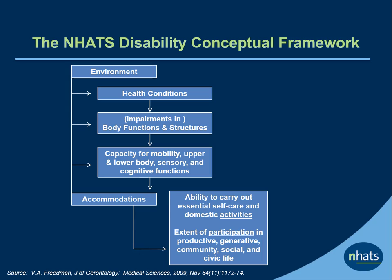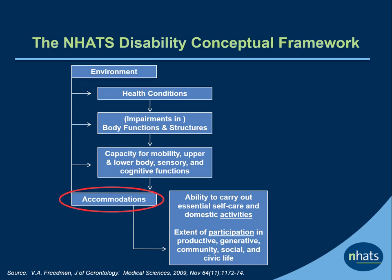The NHATS framework blends the language of the World Health Organization's International Classification of Functioning with the NAGI model of disablement. Here, the word capacity refers to an individual's physiological, cognitive, and sensory capabilities to carry out basic tasks in a controlled environment. The framework also recognizes that individuals accommodate or change their behavior in response to changes in capacity, such as doing an activity less frequently, using assistive devices, or getting help from other persons.